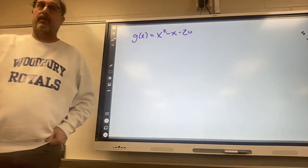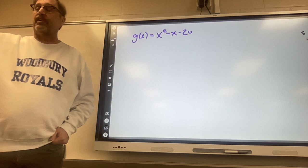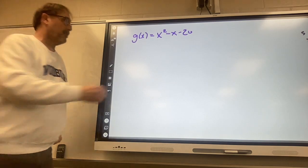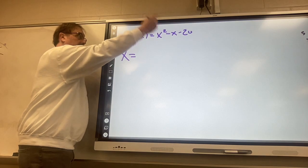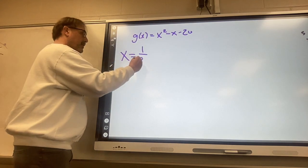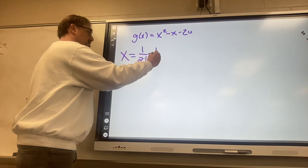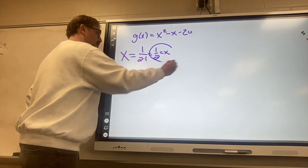Say it out loud, we're gonna do this one twice as fast. x equals negative b over 2a. The axis of symmetry: x equals negative b, negative negative 1 over 2a. The axis of symmetry is x equals one-half.